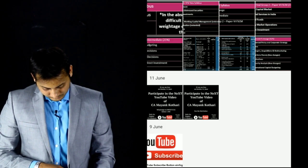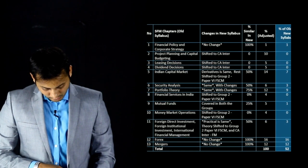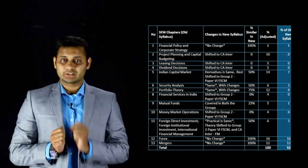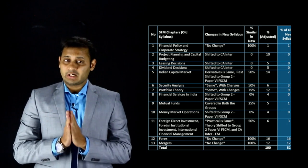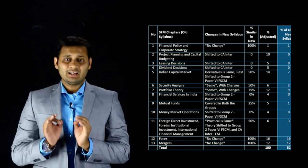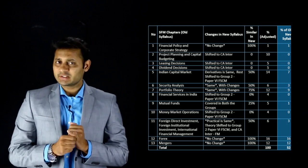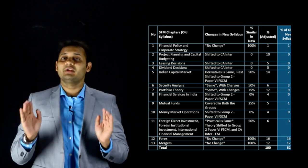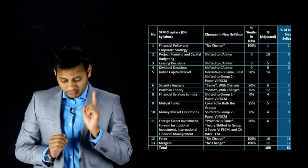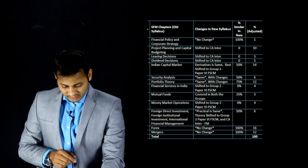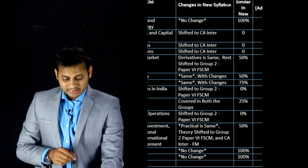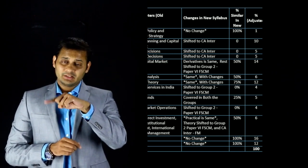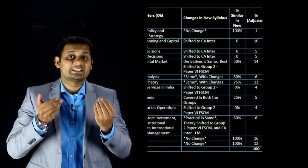As you can see, some columns have been created. The first column shows the number, which tells how many chapters were in the old syllabus. The second column contains the SFM chapter names from the old syllabus — these chapter names are according to the institute's module, not from any faculty's book, so it will be easy for everyone to match the changes.